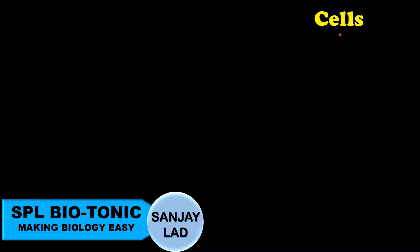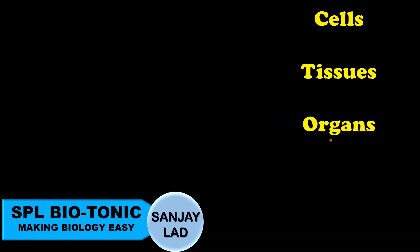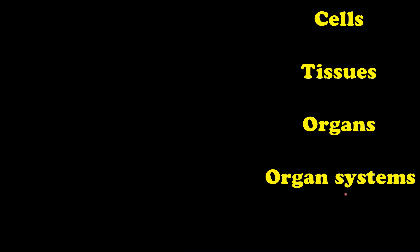Hello everyone. Welcome to one more video of Special Biotonic. Students, we know that in case of multicellular organisms like human beings, the structural and functional unit of the body is a cell. These cells come together to form tissues, which in turn form organs. Many organs form an organ system to constitute an organism.